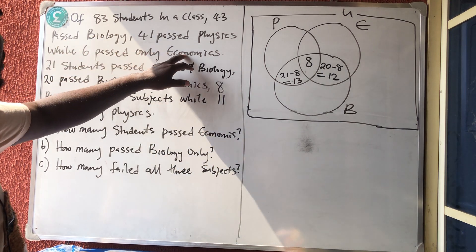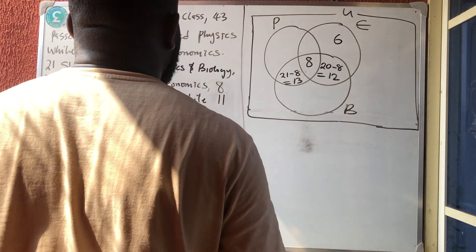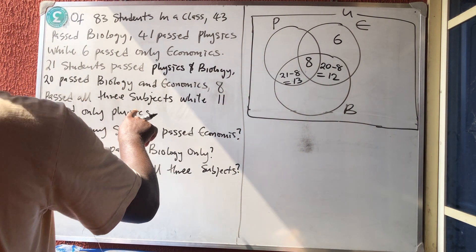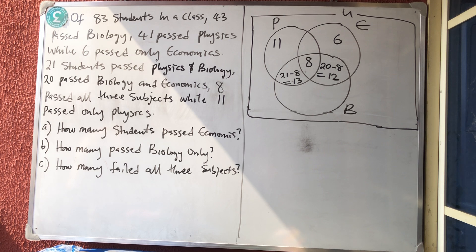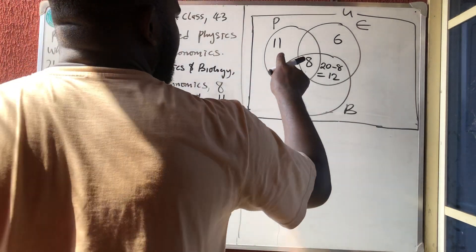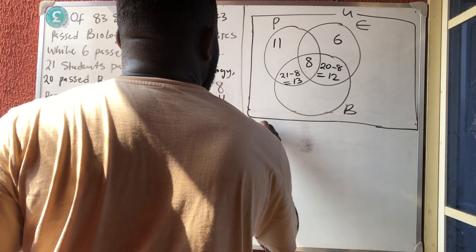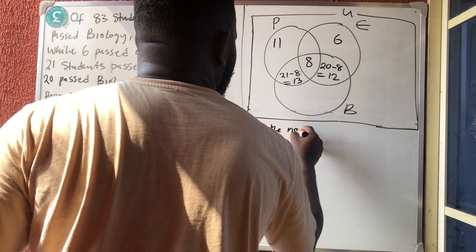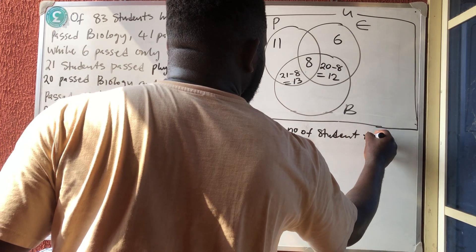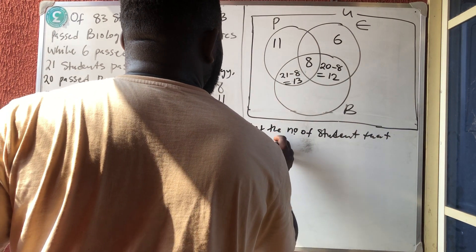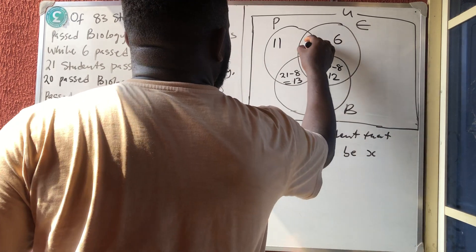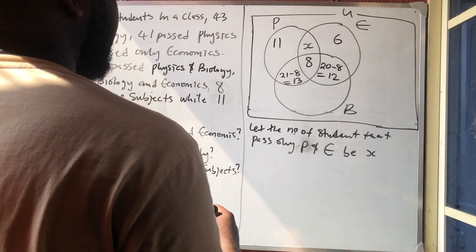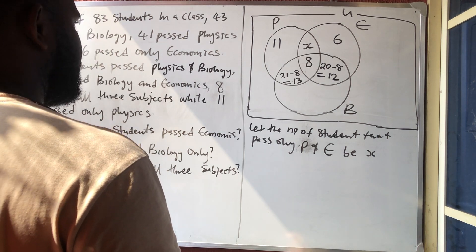Six passed only Economics, so we place 6 in the Economics-only region. Eleven passed only Physics, so 11 goes in the Physics-only region. We don't yet have the number who passed both Physics and Economics, so let that value be x.